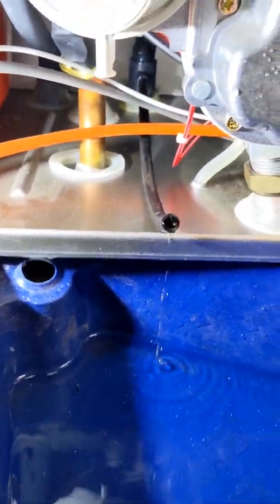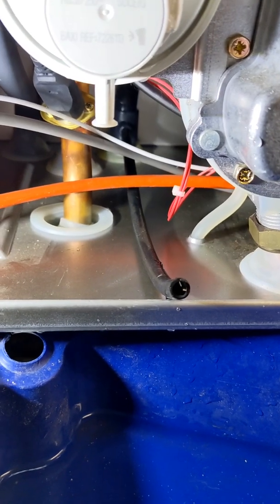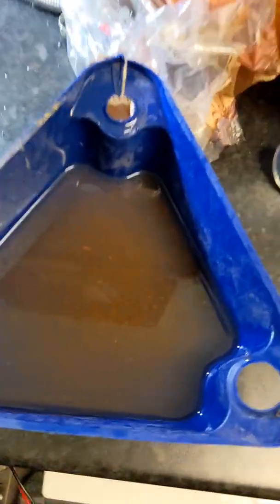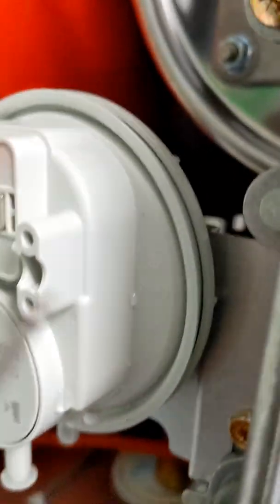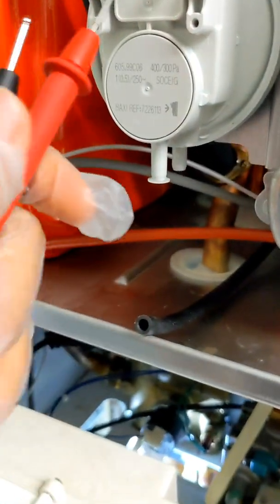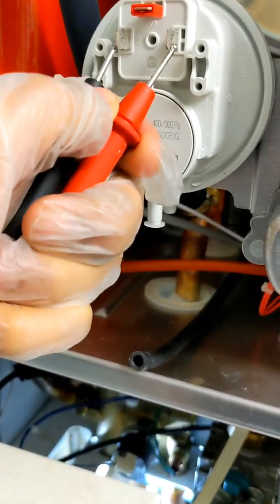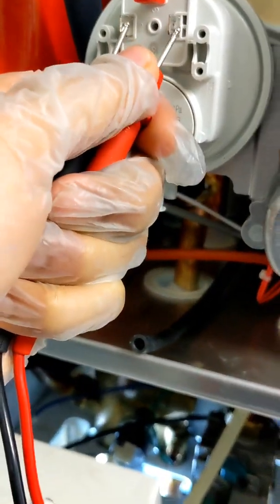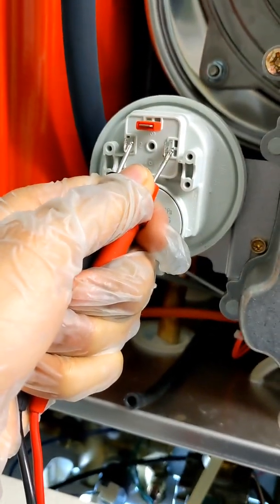So I'm going to take out the trap now and see where it's blocked further down. That's all the stuff that came out of the condensate trap. Now that my air pressure switch is empty, it's not full of condensate anymore. Let's get these back on. Right, there we go. Got my continuity.